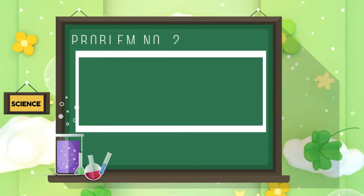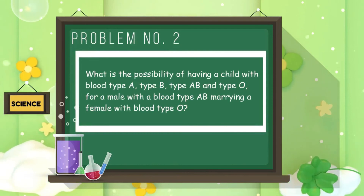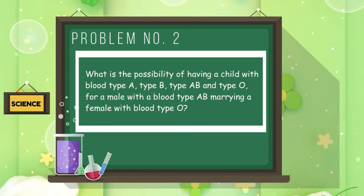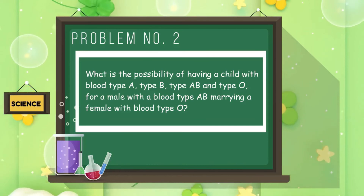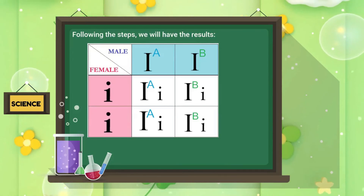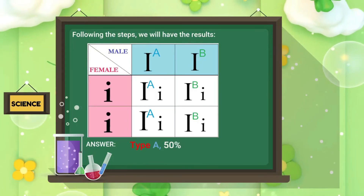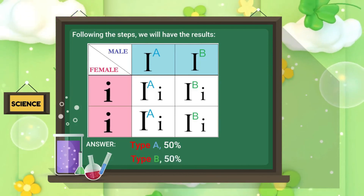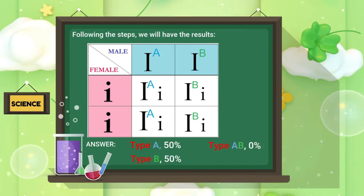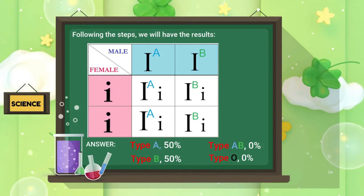Problem 2: What is the possibility of having a child with blood type A, type B, type AB, and type O for a male with blood type AB marrying a female with blood type O? Following the steps, the results from the cross are: type A — 50%, type B — 50%, type AB — 0% (no possibility), and type O — 0%.